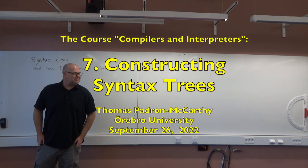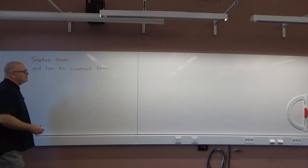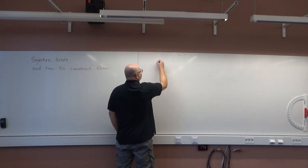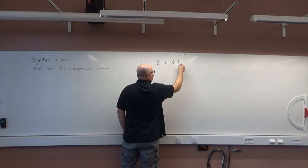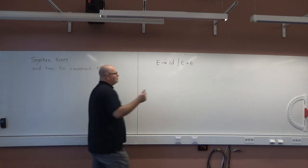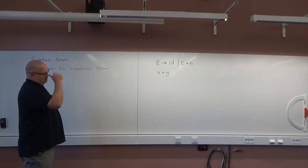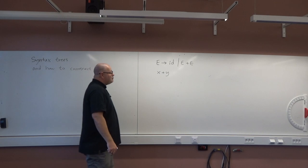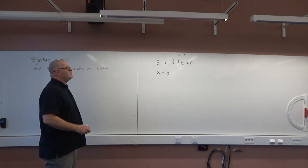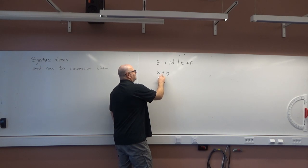Good morning and welcome to this rather strange lecture room. Today we'll talk about syntax trees and how to construct them. You remember about syntax trees — we have a grammar that says something like an expression can be an identifier, or it can be an expression plus another expression. And if we get some input like that, it's an identifier plus another identifier. If we build a parse tree for this, the parse tree shows all the productions that are used to generate this from the start symbol.